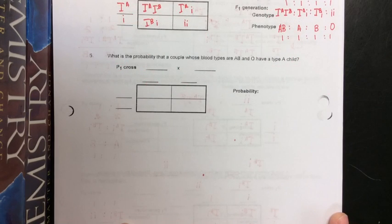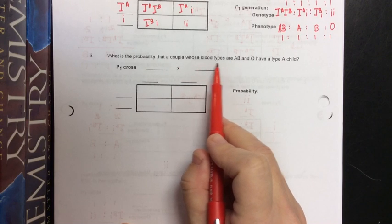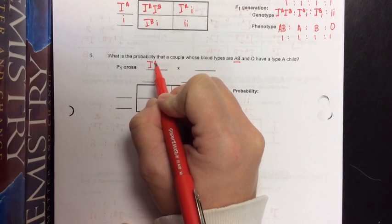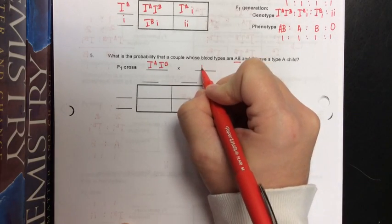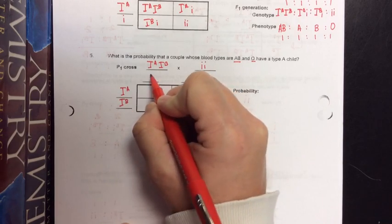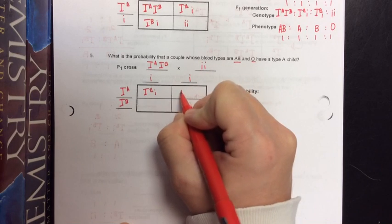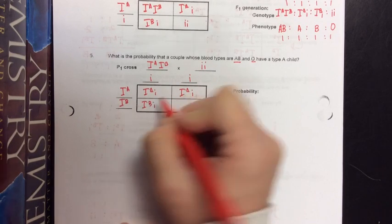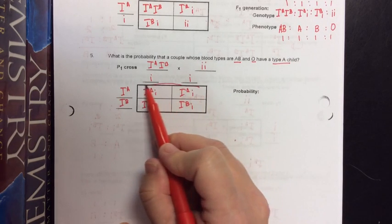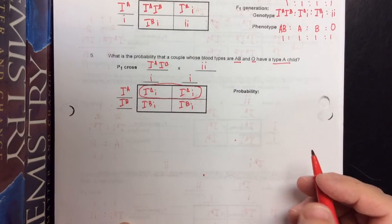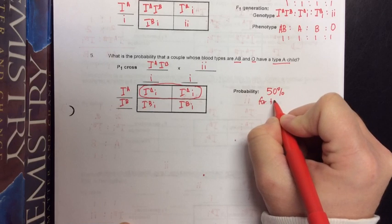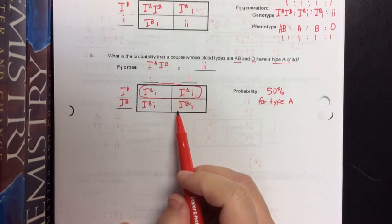The next question asks: what's the probability that a couple whose blood types are AB and O will have a type A child? Type AB is I^A I^B and type O is little i little i. Filling out the Punnett square, the only children that are type A are two out of four boxes — so that's one-half, or 50% probability for type A. The other 50% will be type B.